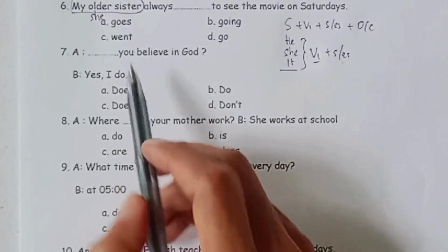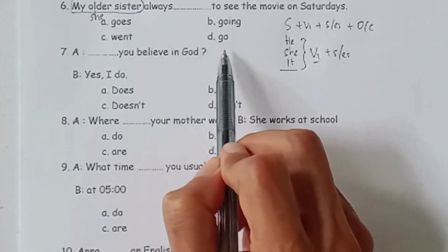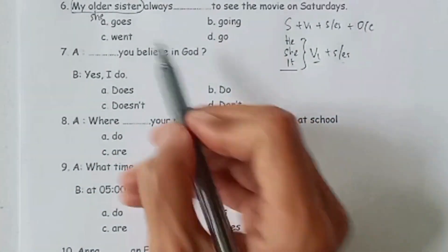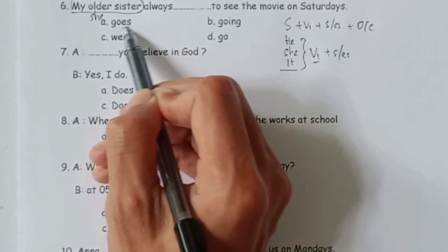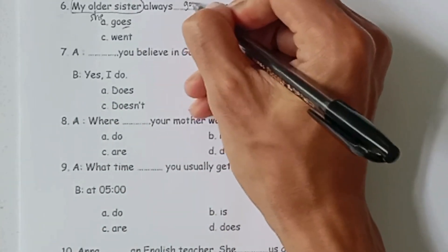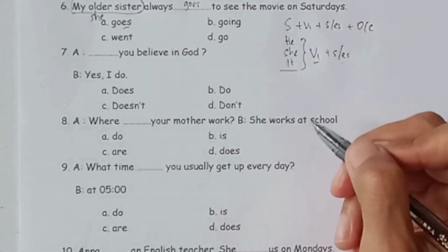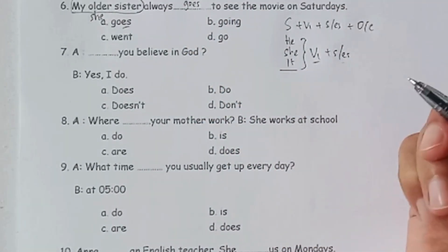Karena disini pilihannya adalah goes, going, went, and go, maka yang paling tepat adalah goes. My older sister always goes to see the movie on Saturdays.